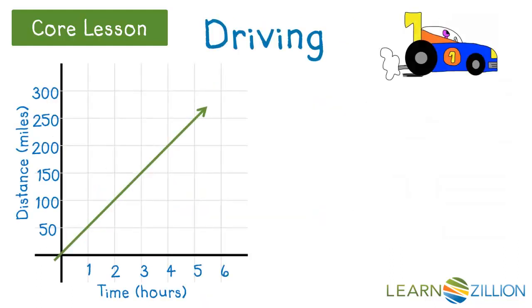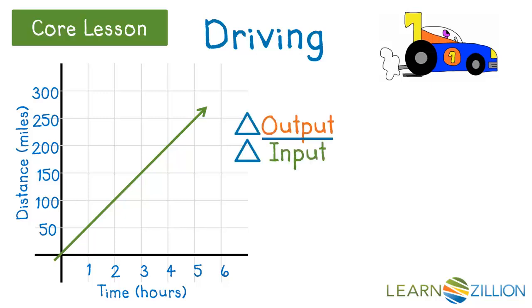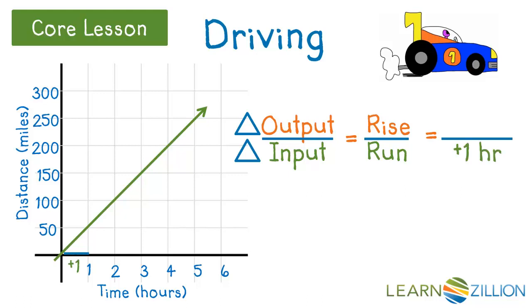Let's look a little closer at traveling by car. Rate of change is a ratio of change in output to change in input. I use a triangle in front of these terms to represent 'change in.' Sometimes we call it rise over run — how much does the line rise, up or down, to how much does it run, left or right? Starting at the origin and looking at a change of one hour — as we increase one hour, the output increases positive 50 miles. A change in output of positive 50 miles to a change in input of plus one hour is 50 miles per hour, our rate of change.